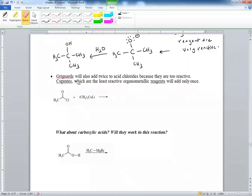It's important to mention that Grignard reagents will add twice to acid chlorides because they are too reactive. However, cuprates, which are the least reactive organometallic reagents, will only add once.